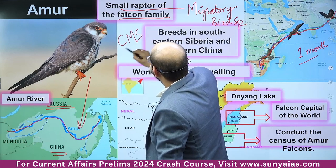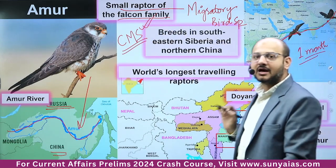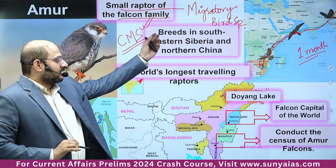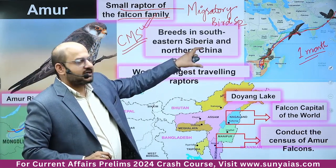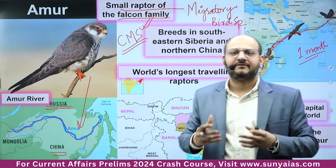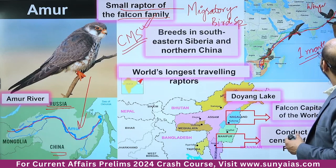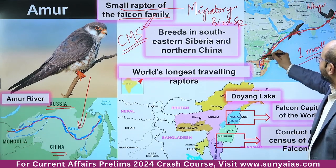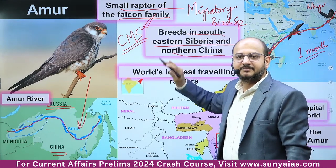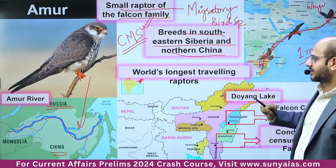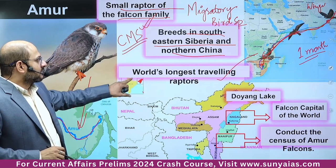CMS — Convention on Migratory Species — is relevant here. Amur Falcon stays for one month at Doyang Lake in Nagaland, which is called the Falcon Capital of the World. They stay, nest, rejuvenate, and take food and fuel for the next flight. After winters they fly, stay here for one month, and then start their journey towards eastern Africa. They breed in southeastern Siberia and northern China. It is one of the world's longest-traveling raptors.